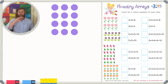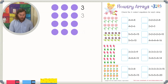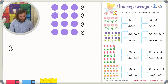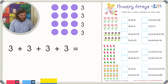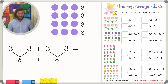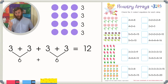One thing we can do is add up each row. I know there's three in each row, so we can write three and add up all of our threes: three plus three plus three plus three. I know three plus three equals six, and six plus six is another doubles fact — six plus six equals twelve. So three plus three plus three plus three equals twelve.